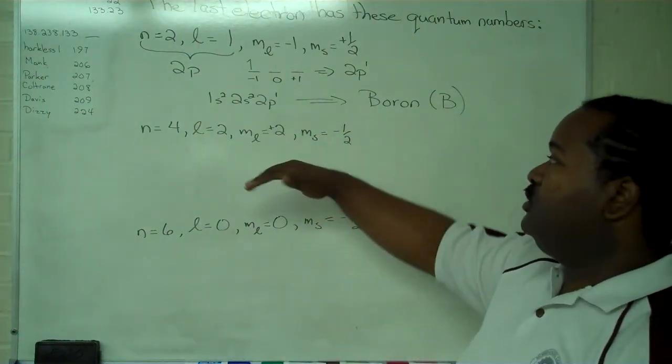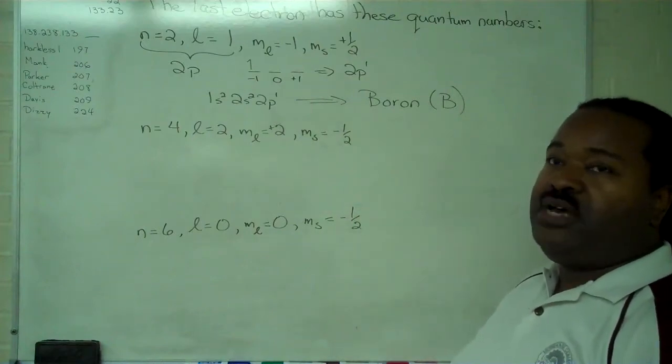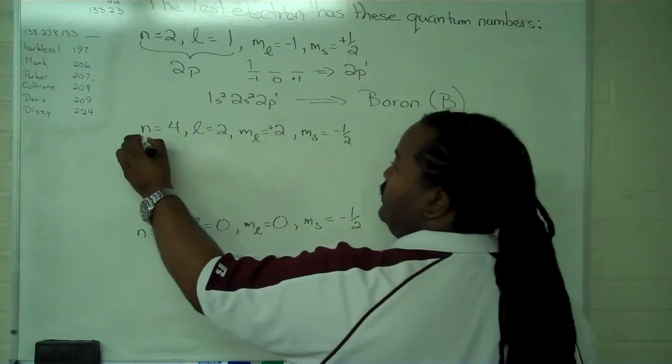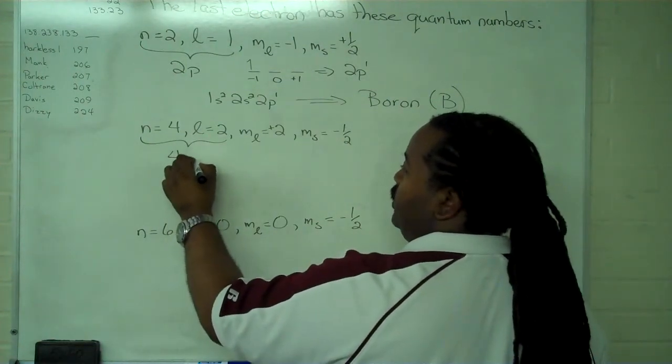For our next one, n equals 4, l equals 2, m sub l equals plus 2, m sub s equals minus 1 half. So, again, the first step, determine that last orbital. This is a 4d.